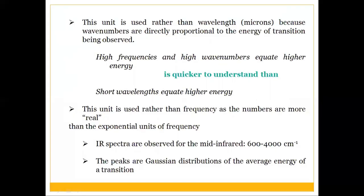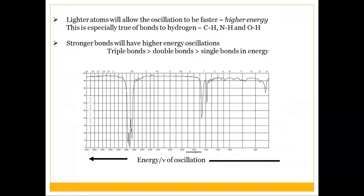The IR spectrum is observed in the mid-infrared range, from 600 to 4000 cm⁻¹. Lighter atoms allow faster oscillations at higher energy — this is especially true of bonds to hydrogen, such as C-H and O-H bonds, which are always observed at higher wavenumbers.